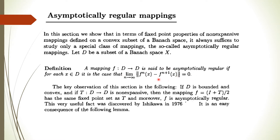We observe that if D is bounded and convex and T is any mapping going from D to D which is non-expansive, then the mapping f defined as the identity plus T divided by 2 has the same fixed point set as T.